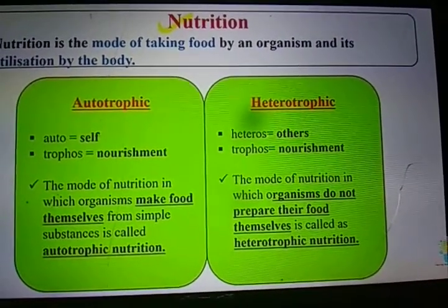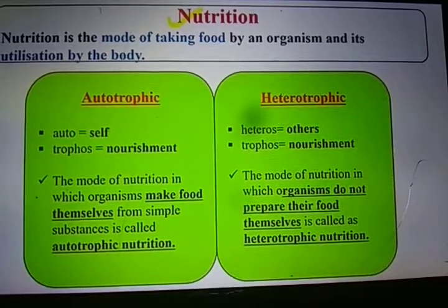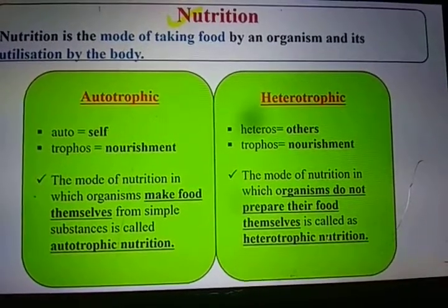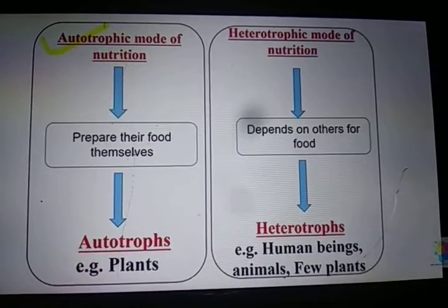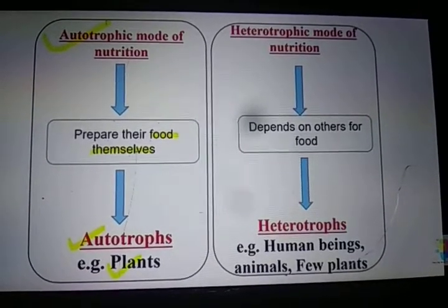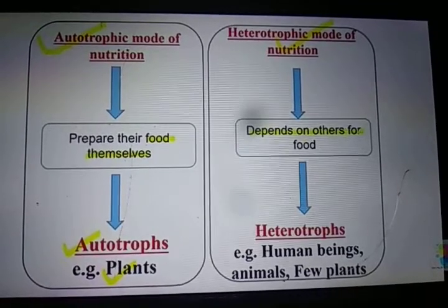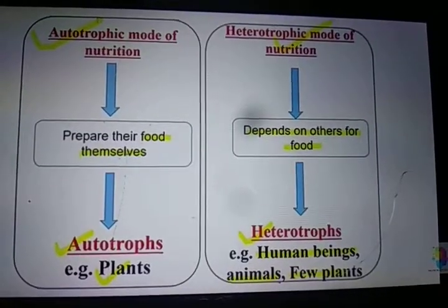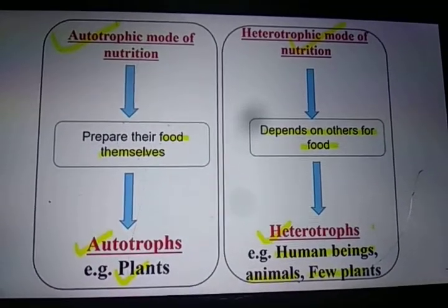Now we will talk about heterotrophic nutrition. The word 'heteros' means other and 'trophos' means nourishment. The mode of nutrition in which organisms do not prepare their food themselves and depend on others is called heterotrophic nutrition. Autotrophs such as plants prepare their own food, while heterotrophs — like humans, animals and a few plants — depend on others. We human beings are also heterotrophs because we depend on plants and animals for our food.